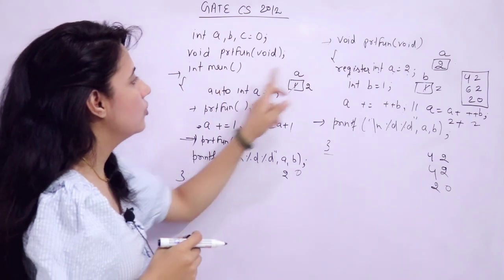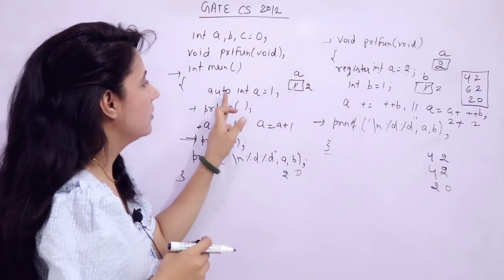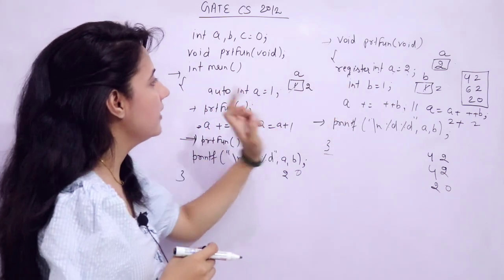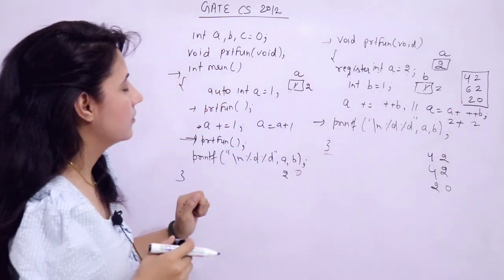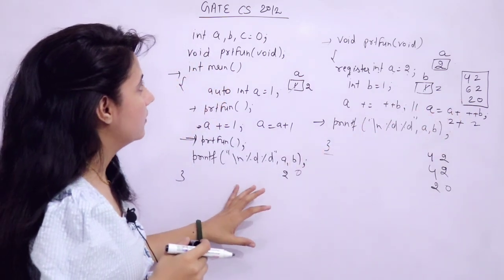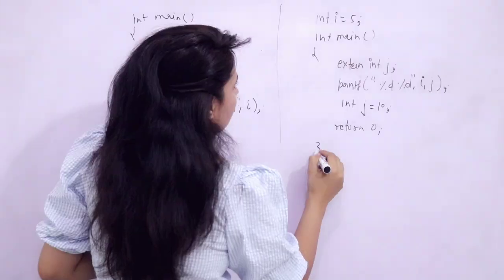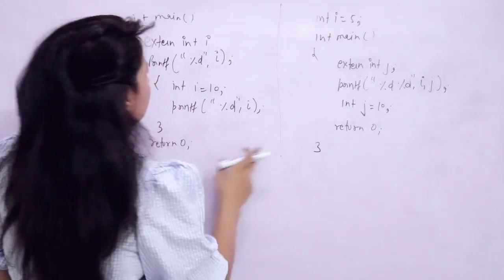So if you are using auto and register, the output is 4 2, 4 2, 2 0. If you had used static and static, a different output is obtained. That was one question. Now let's move to the next questions.